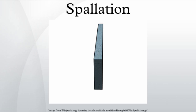In nuclear physics, spallation is the process in which a heavy nucleus emits a large number of nucleons as a result of being hit by a high-energy particle, thus greatly reducing its atomic weight.